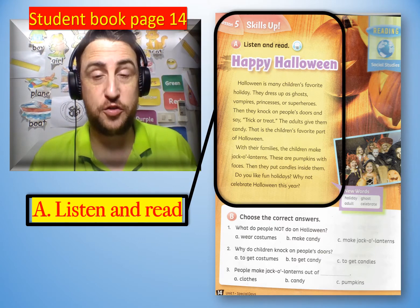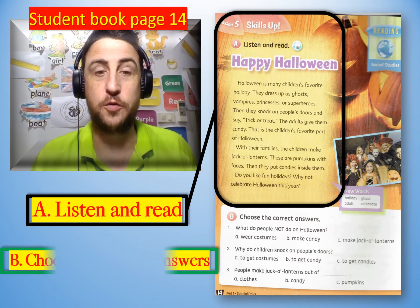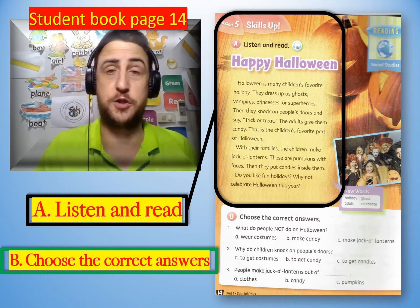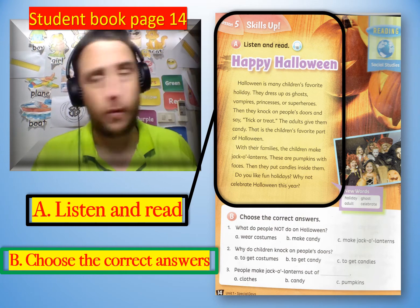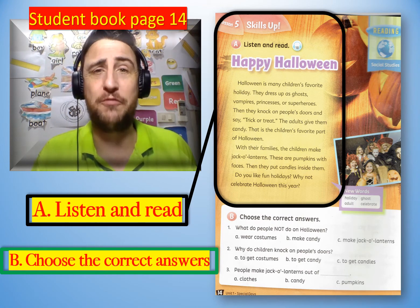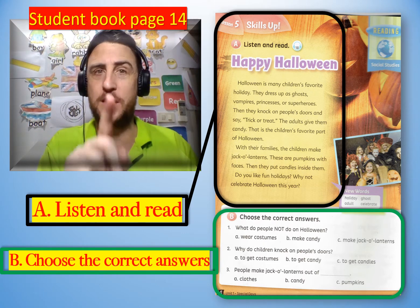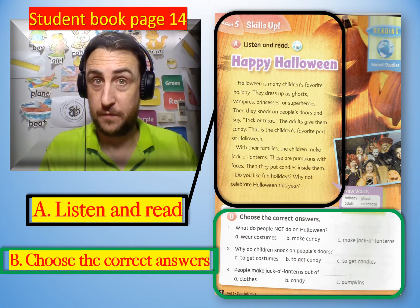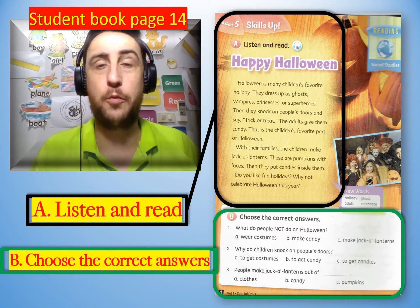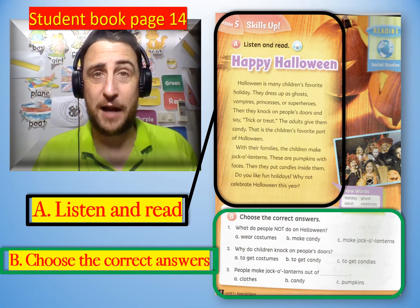After we have read the story Happy Halloween, we are going to answer Part B: Choose the correct answers. There are three questions. We will look at these questions when we finish reading the story. Don't worry — I will tell you what to do. You do need your student book and a pencil. When we finish that, we are going to look at the workbook.